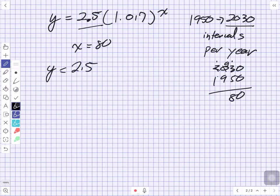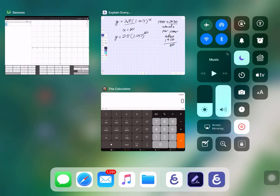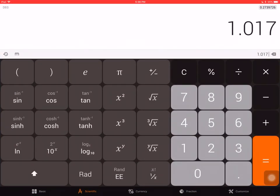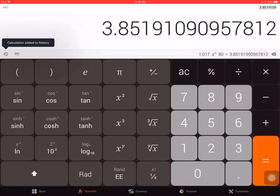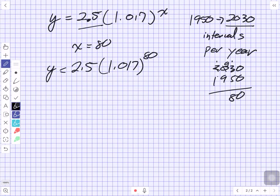Y is equal to 2.5 times 1.017 to the power of 80. That's a very large exponent. So let's try it on our calculator. 1.017 to the power of 80 equals 3.85191. So we're going to round to five decimal places.